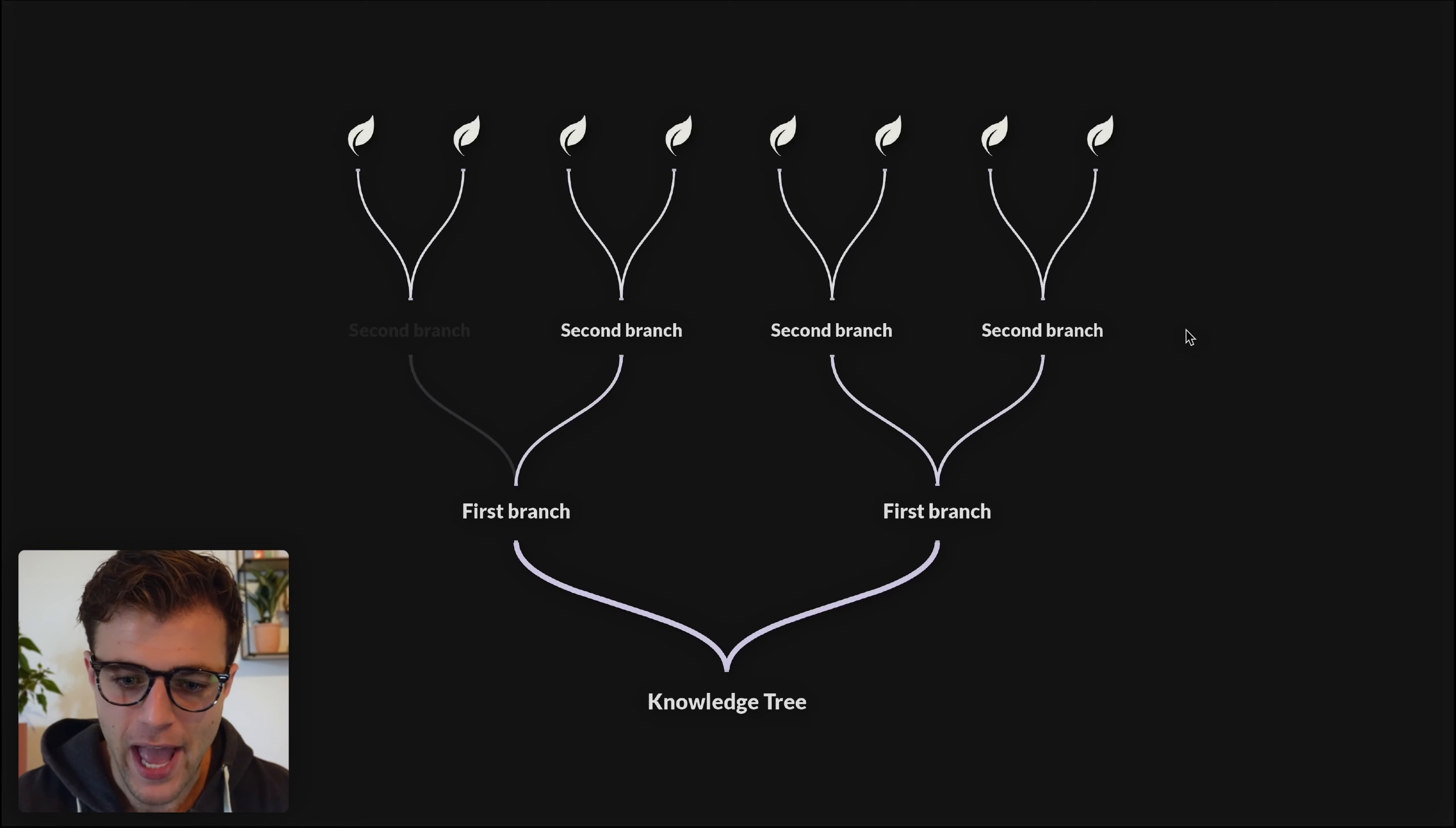And then lastly we have this reflection part. Now in the previous video we explored this concept of the knowledge tree, where we have all of these knowledge branches that are dependent on each other and growing out of each other. And if we cut one of these branches, then all the branches that are attached to that one will also die with it.